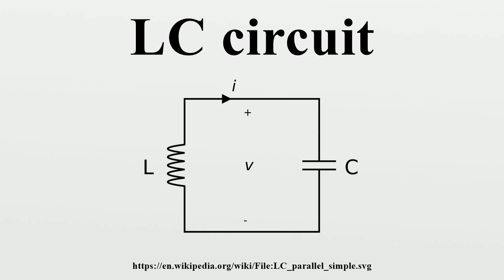An LC circuit is an idealized model since it assumes there is no dissipation of energy due to resistance. Any practical implementation of an LC circuit will always include loss resulting from small but non-zero resistance within the components and connecting wires. The purpose of an LC circuit is usually to oscillate with minimal damping, so the resistance is made as low as possible. While no practical circuit is without losses, it is nonetheless instructive to study this ideal form of the circuit to gain understanding and physical intuition. For a circuit model incorporating resistance, see our LC circuit terminology.